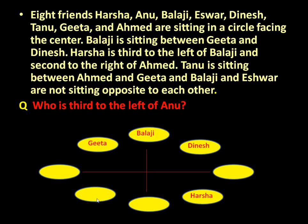Harsha is also second to the right of Ahmad, so Ahmad must be placed such that Harsha is second to Ahmad's right — Ahmad will occupy this position. Next, Tanu is sitting between Ahmad and Geeta. Only one space is there between Ahmad and Geeta, so obviously Tanu will occupy that position.